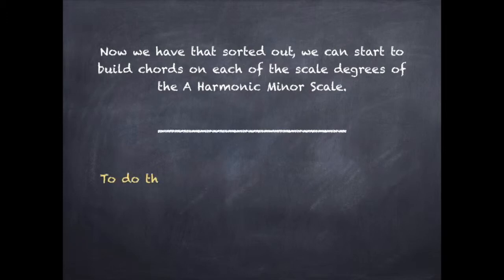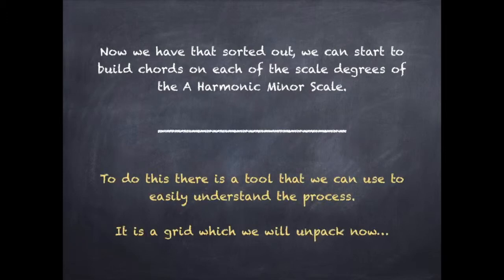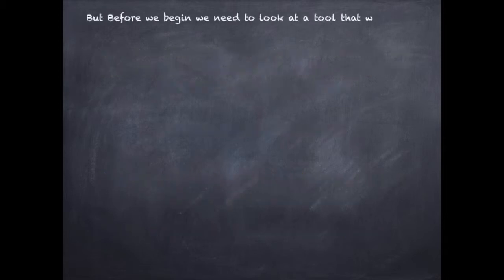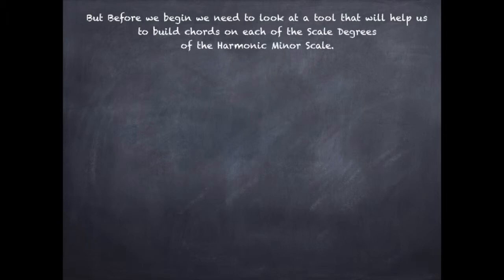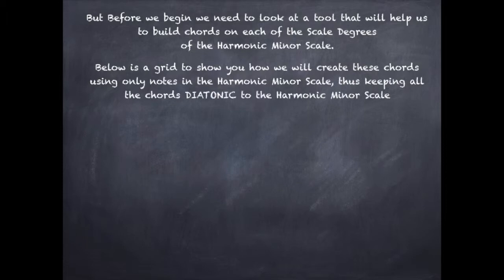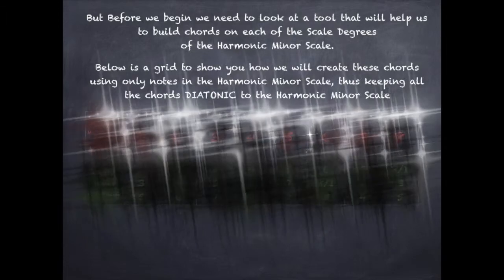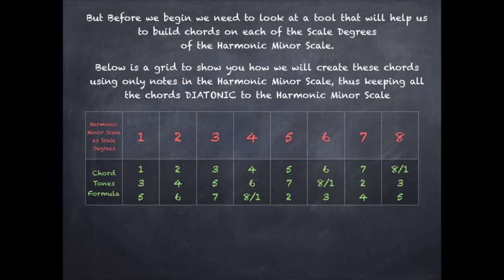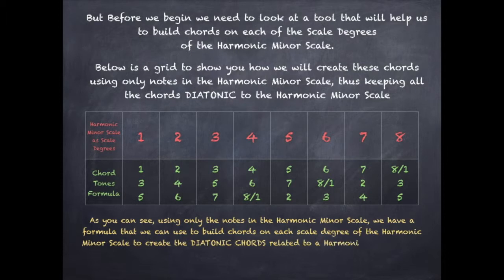To do this, there is a tool that we can use to easily understand this process — it is a grid which we will unpack now. Below is a grid to show you how we will create these chords using only the notes in the harmonic minor scale, thus keeping all the chords diatonic to the harmonic minor scale. Using only the notes in the harmonic minor scale, we have a formula that we can use to build chords on each scale degree of the harmonic minor scale to create the diatonic chords related to a harmonic minor scale.